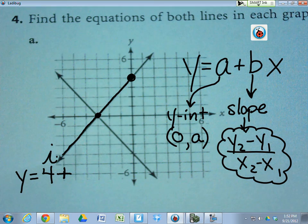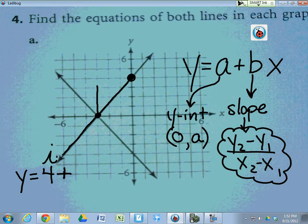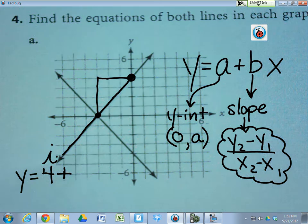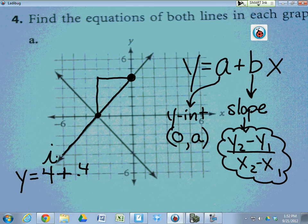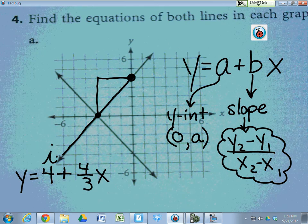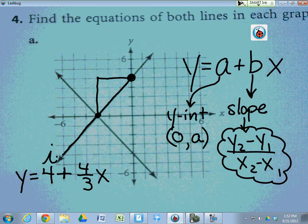We could make these little steps and see how far up does it go for how far over. It looks like it goes up four for every over three, and that's the equation of the line in part A for the one going uphill.